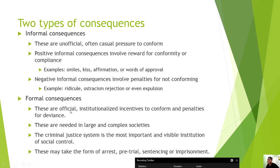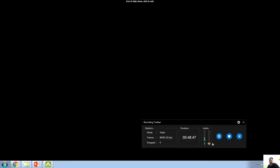The criminal justice system is the most important and visible institution of social control. Sanctions may take the form of arrest, pretrial, sentencing, and imprisonment. That ends the discussion on Deviants and the theories under Deviants, covering socialization, norms, conformity, strain theory, control theory, and conflict theory. Thank you, and I hope we learned something.